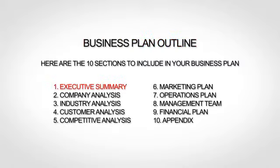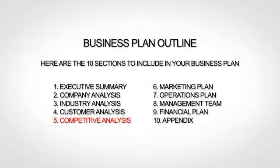The first section is your executive summary, which is essentially the introduction to your business plan. The next section is your company analysis, which gives a little more background. Next up is your industry analysis, where you talk about your market and trends. The fourth section is your customer analysis, where you go more in-depth about your target market. The fifth section is your competitive analysis, where you provide an analysis of your competition, including what differentiates you from your competitors.